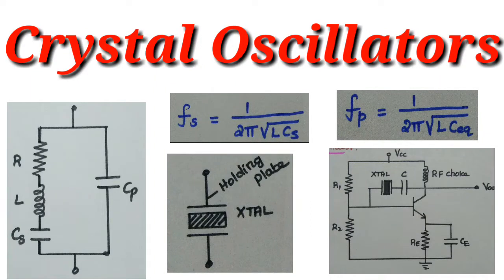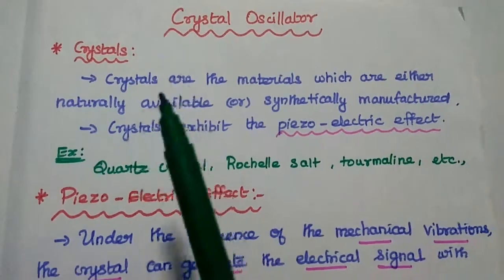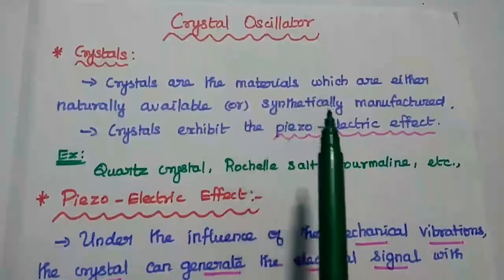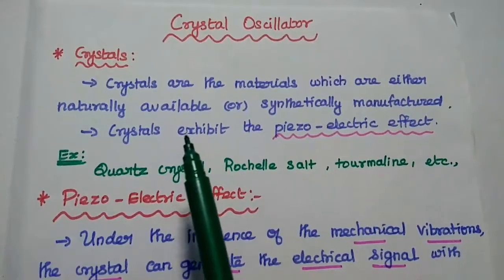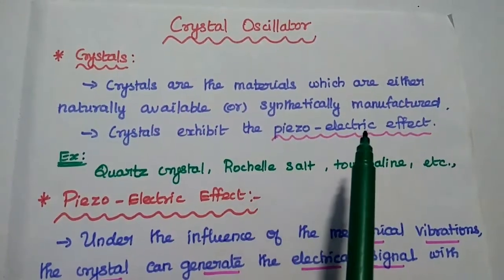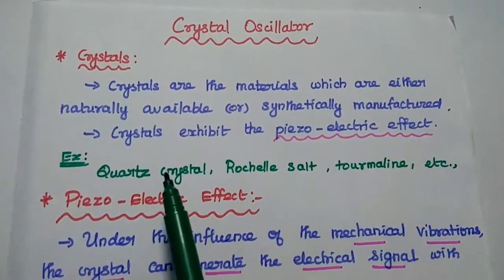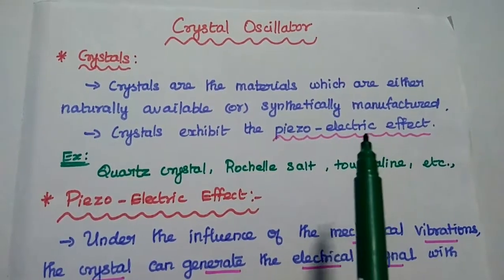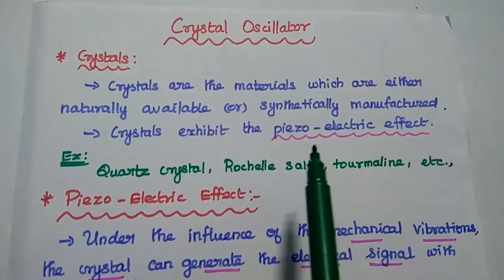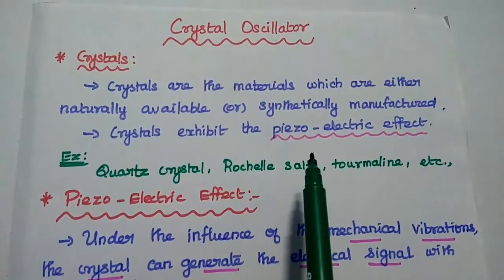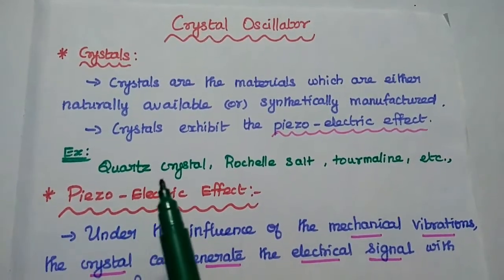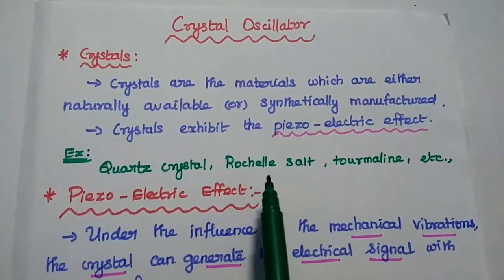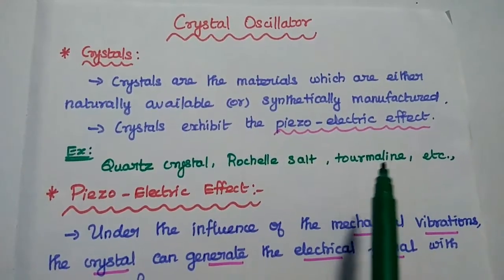Dear students, now we are going to discuss crystal oscillators and their types in detail. Crystals are materials which are either naturally available or synthetically manufactured. These crystals exhibit the piezoelectric effect, which is widely used in oscillator circuits. Examples are quartz crystal, Rochelle salt, tourmaline, etc.